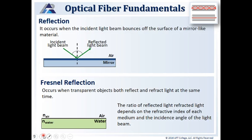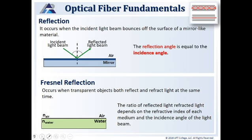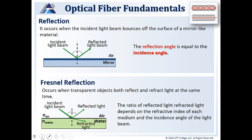For reflection — this is not refraction, this is reflection. Reflection occurs when the incident light beam bounces off the surface of a mirror-like material, with the reflected beam at an equal and opposite angle to the incident angle. Fresnel reflection occurs when a transparent object both reflects and refracts light at the same time. So when you shine a laser at a glass window, that laser light is traveling through the glass as refracted light, but it's also being reflected off of that glass. The ratio of reflected light depends on the refractive index of each medium and the incident angle of the light beam.